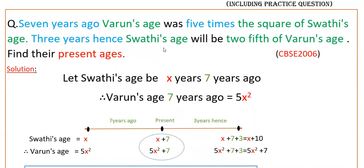Hello everyone. Today I am going to tell the solution of this problem: 7 years ago, Varun's age was 5 times the square of Swathi's age. 3 years hence, Swathi's age will be 2 fifths of Varun's age. Find the present ages.